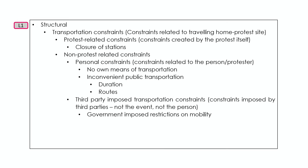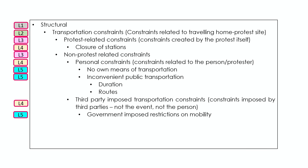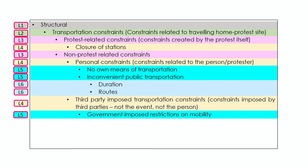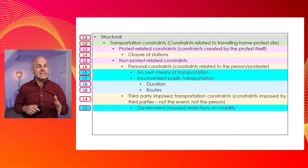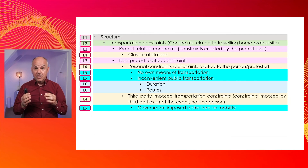We ended up with a six-level framework, compared to the four-level one at the end of step one. Level one is structural constraints; level two is transportation; level three has two themes — protest-related and non-protest-related constraints; level four has three themes; level five has three themes; and level six has the two final themes we identified — duration and routes. By looking at nuances, we managed to squeeze so much data from just three participant quotes. Focus on developing your skills to read and interpret the relevant quotes, and then develop your skills of identifying the theme and labelling it.